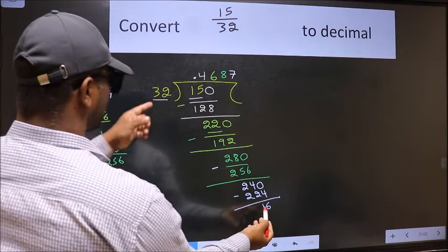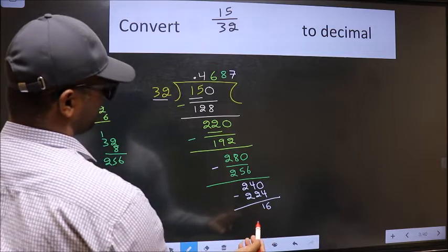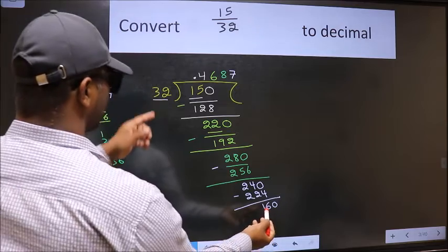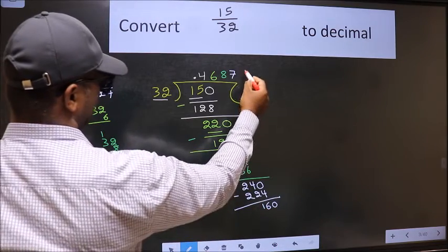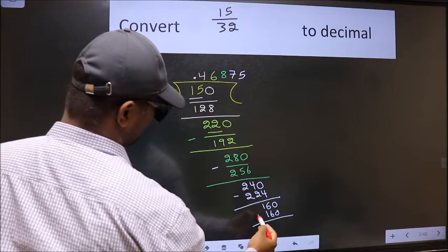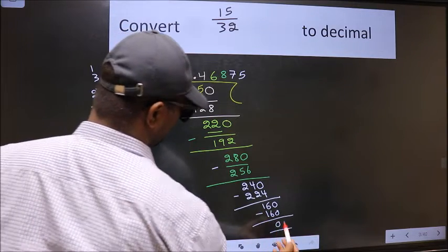16 is smaller than 32. And we already have the decimal. So directly take 0. 160. When do we get 160 in 32 table? 32 5s. 160. Now we should subtract. We got 0.